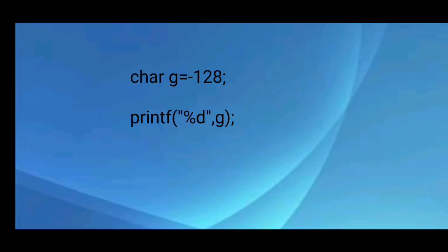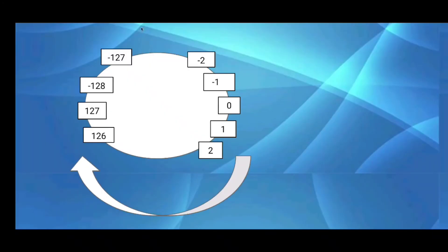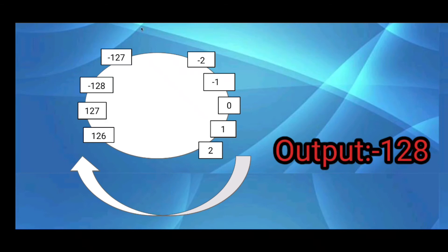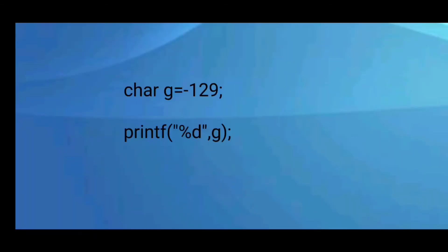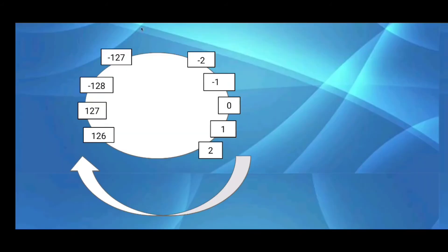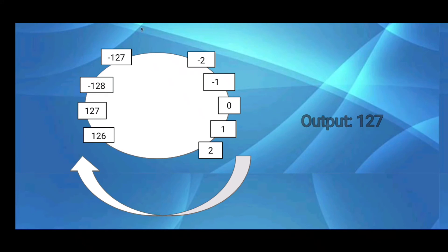Here I am initializing a negative value into variable g. Up to minus 128 we can store in the anti-clockwise direction, so storing minus 128 will print 128 to the output screen. In this example, variable g holds minus 129. In negative values we can store up to minus 128, so this wraps around and will print positive 127 to the output screen.